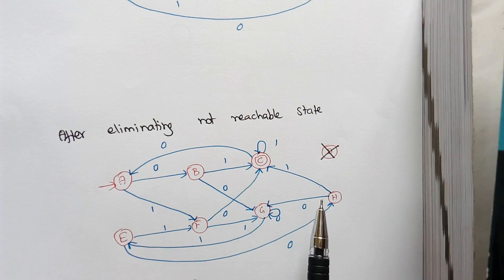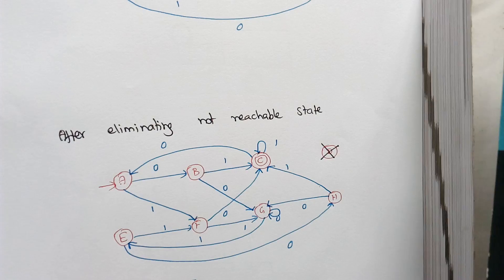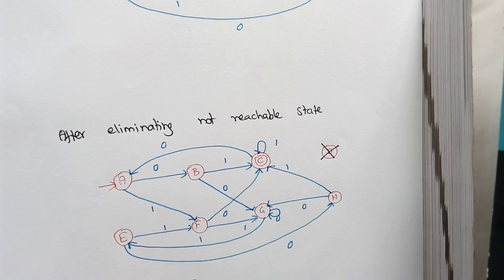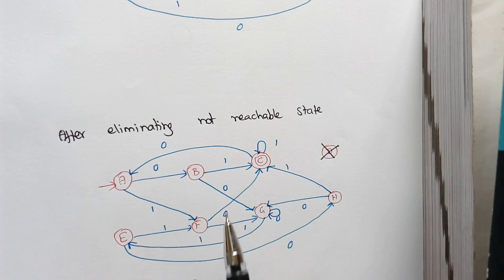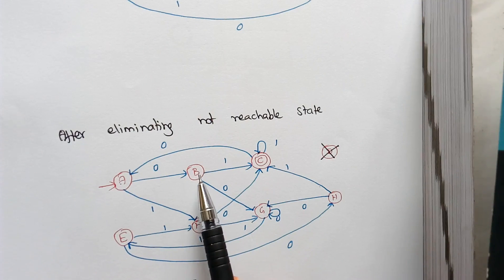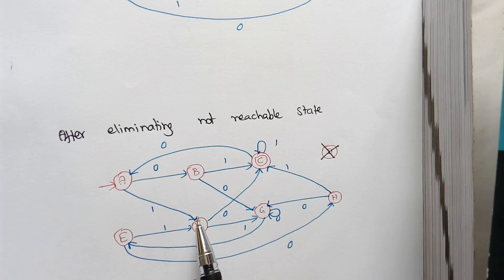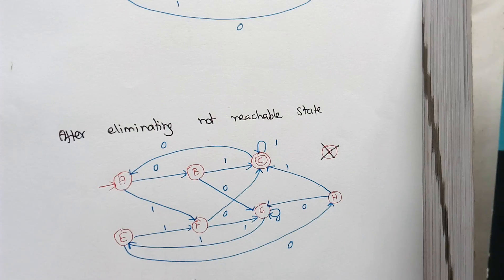Now for minimizing the DFA, we want to minimize the number of states. We have to check whether two states are equivalent or distinguishable. The definition for checking two states to be equivalent is: for all possible input, if one state goes to a final state, then the other state should also go to a final state. If they are equivalent, we can combine them. For example, if we consider states G and B, and on all possible input B goes to a final state and F also goes to a final state, then we can combine these two states together, minimizing the number of states.